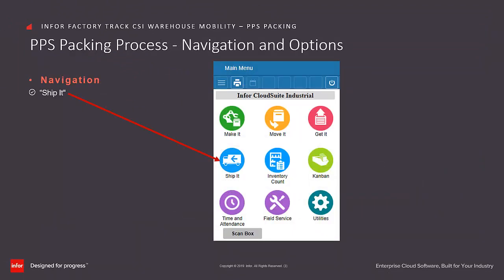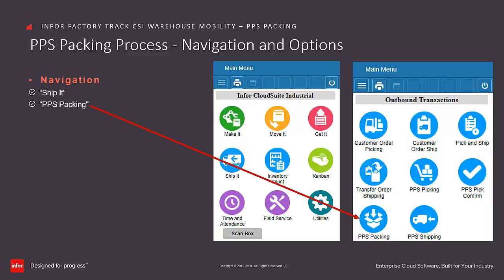To navigate to PPS Packing from the FactoryTrack Warehouse Mobility main menu, click on the Ship It icon. This then navigates to the outbound transaction screen, where you click on the PPS Packing icon.